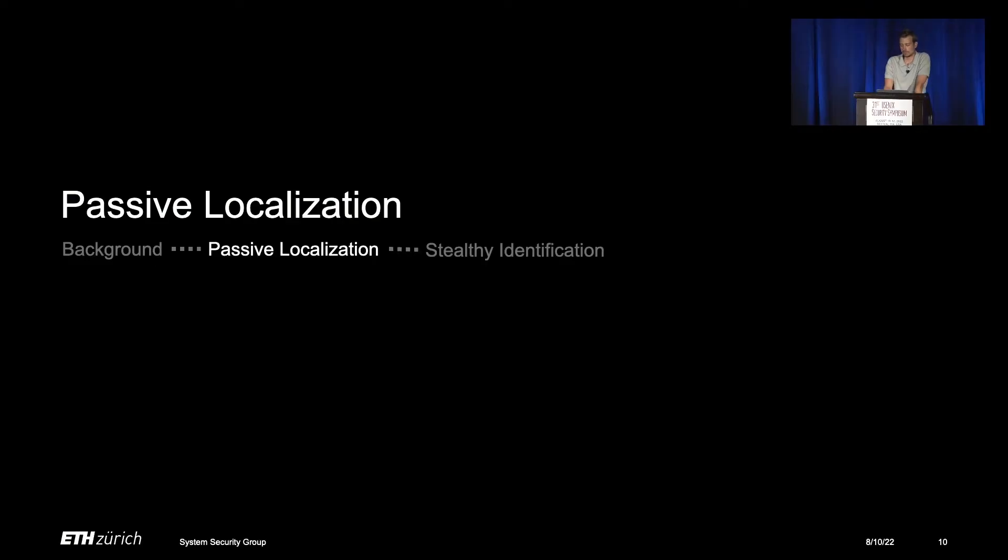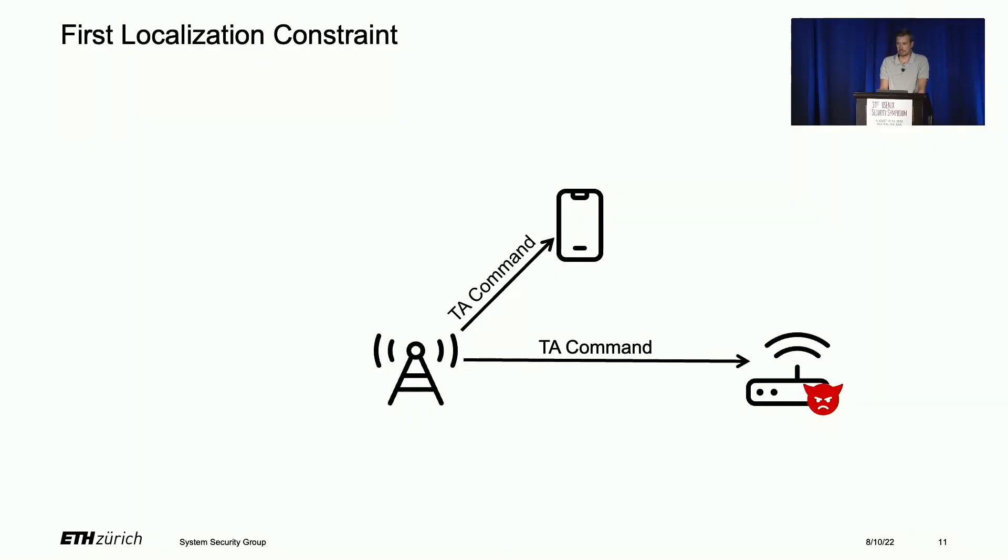How can we use this information for passive localization? The first constraint is straightforward. The timing advance command is sent to the MAC layer, which is unencrypted. We can sniff it with our downlink sniffer and infer the location of the phone in this gray ring, which is 78 meters wide. It's 78 meters wide because of the discretization error of the timing advance command value - it's not a full number, just an integer.